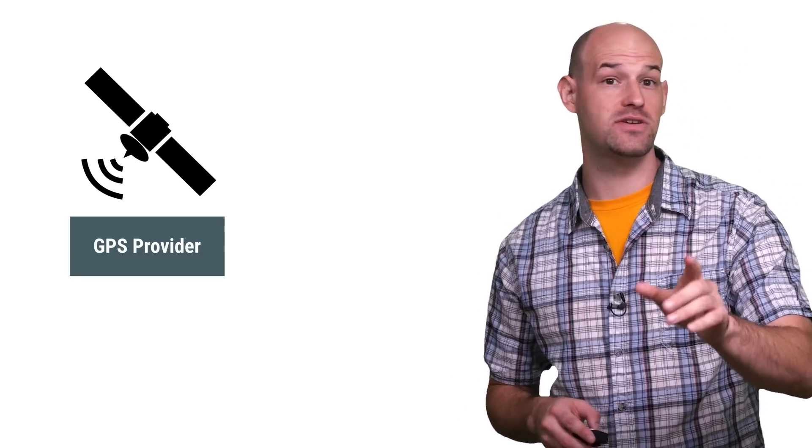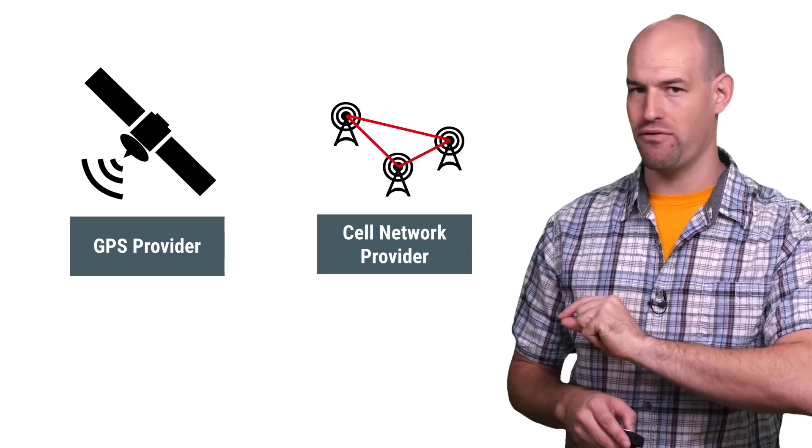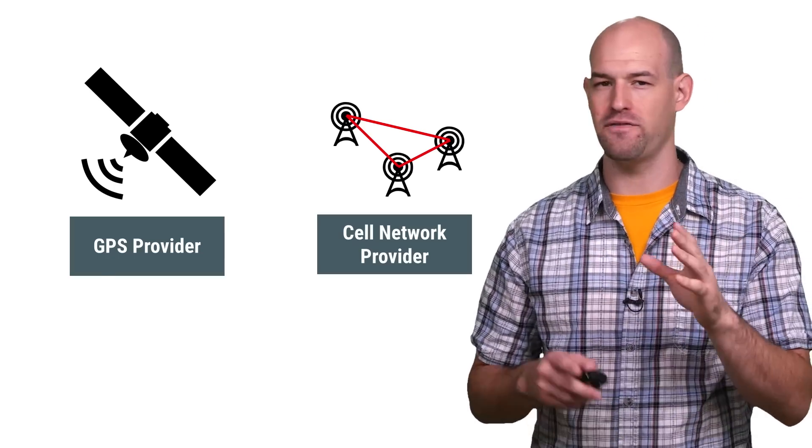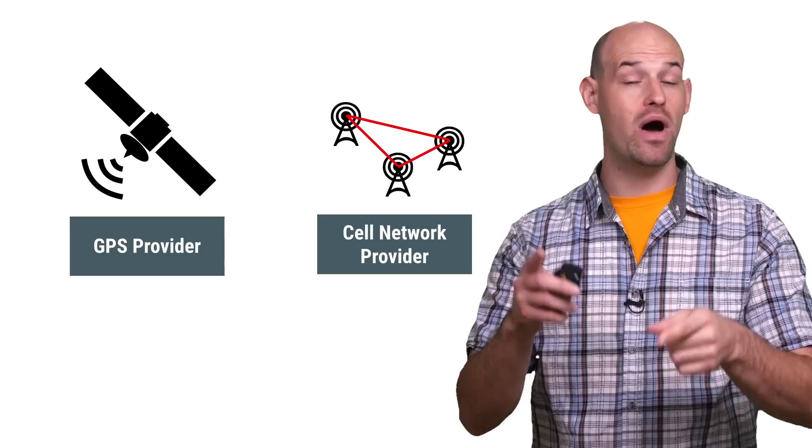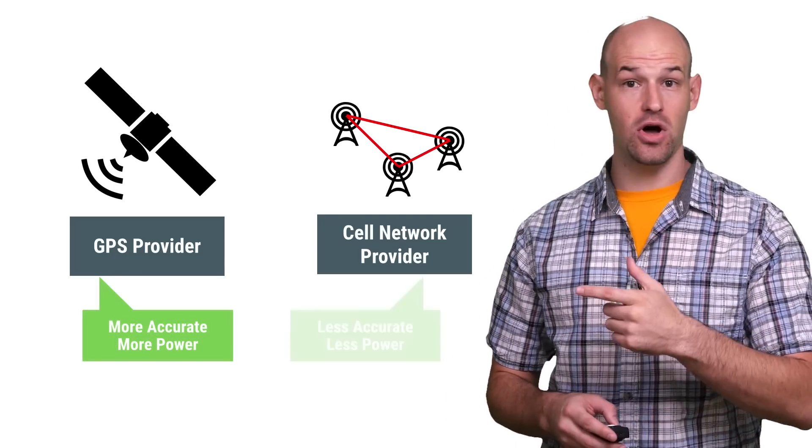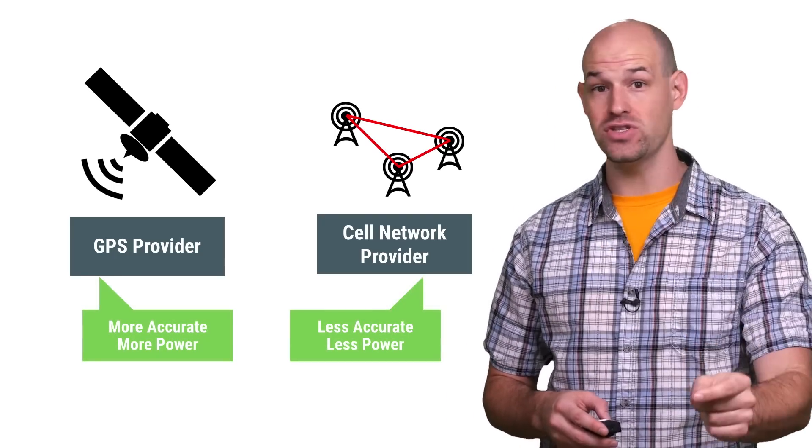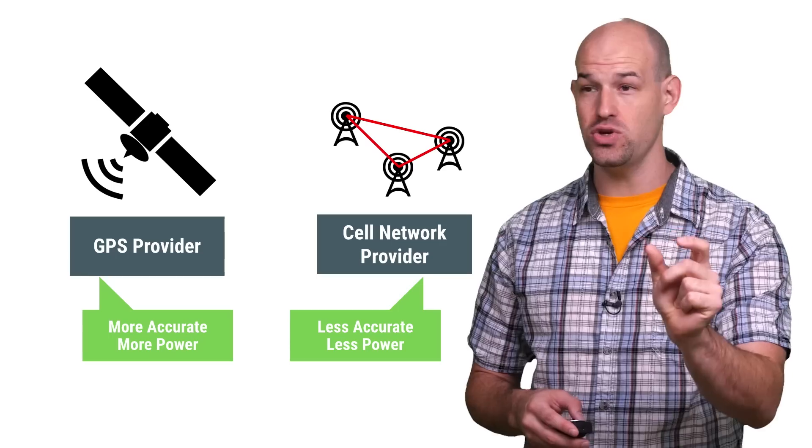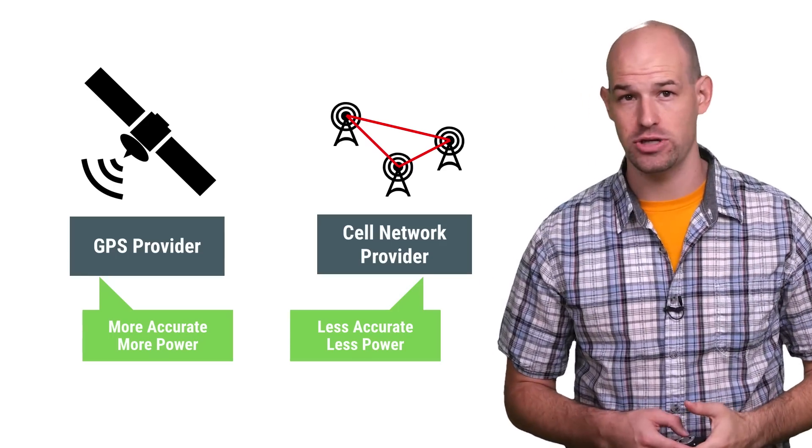Besides the super expensive GPS, there's also the network provider which determines location based upon availability of cell tower and Wi-Fi access points. The result is that less accurate results are given to you but only a portion of the battery is used compared to the GPS version.